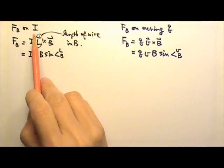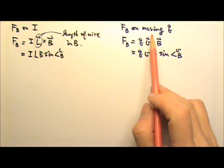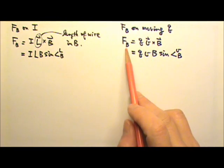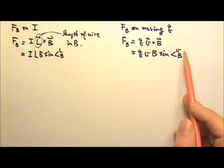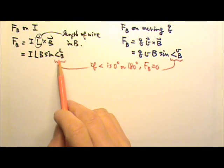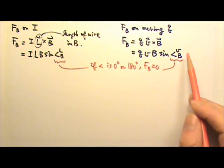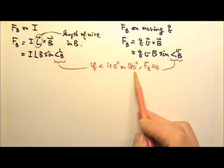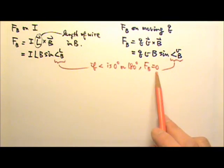Because a current is flowing charges, if we have a moving charge inside a magnetic field, there will be a magnetic force acting on it as well. To find that force, we use Q V cross B, which equals Q V B times sine of the angle between velocity and the magnetic field. Because sine of zero degrees or 180° is zero, if the angle between L and B, or between V and B, is zero or 180°, the magnetic force on the current or moving charge would be zero.